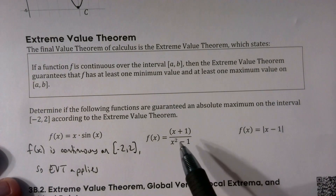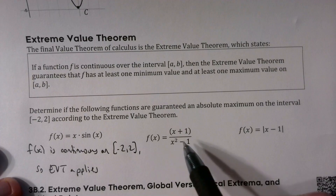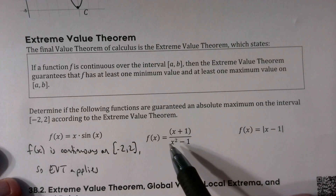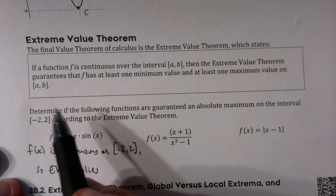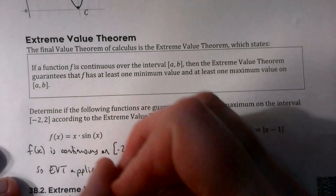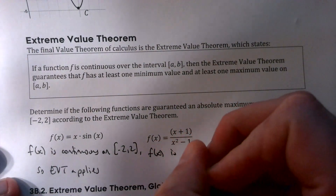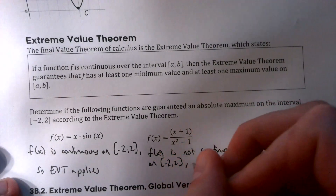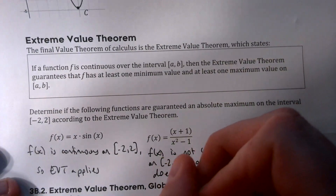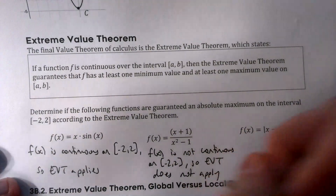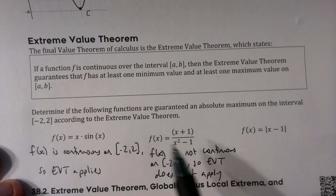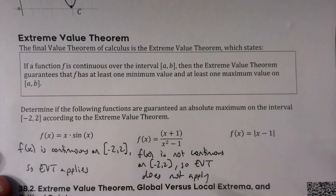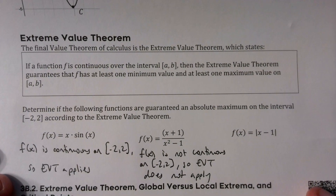For f(x) = (x+1)/(x²−1), we can factor the denominator as (x+1)(x−1), and the x+1 terms cancel. However, it's not continuous at x = −1 or at x = 1, both of which are on this interval. So f(x) is not continuous on [−2, 2], meaning the EVT does not apply and an absolute maximum is not guaranteed. In fact, graphing it would show asymptote behavior around x = 1 with no absolute maximum.